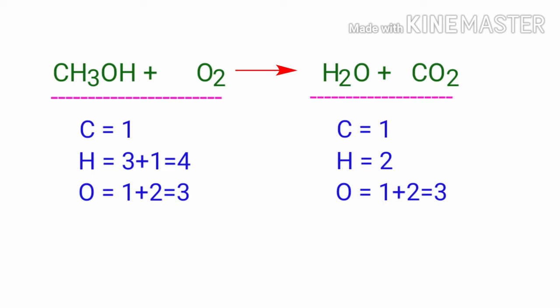On the reactants side, there are 1 Carbon atom, 4 Hydrogen atoms, and 3 Oxygen atoms. On the products side, there are 1 Carbon atom, 2 Hydrogen atoms, and 3 Oxygen atoms. The number of atoms are not balanced on both sides.